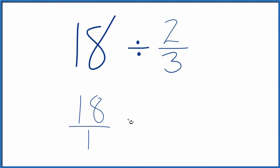Next, instead of division, we're going to multiply. And we're going to multiply by the reciprocal of 2 thirds.